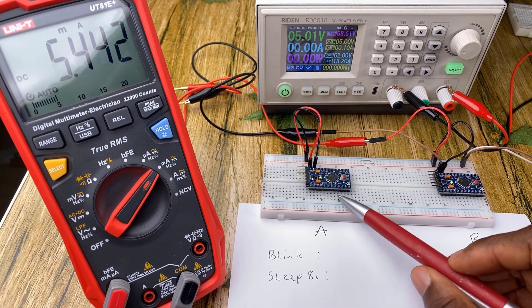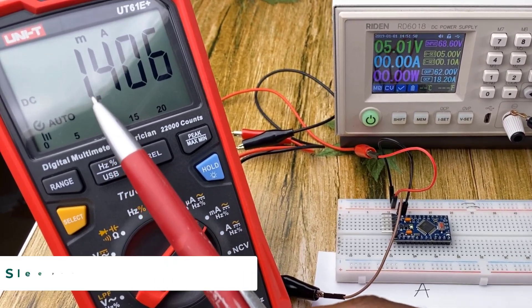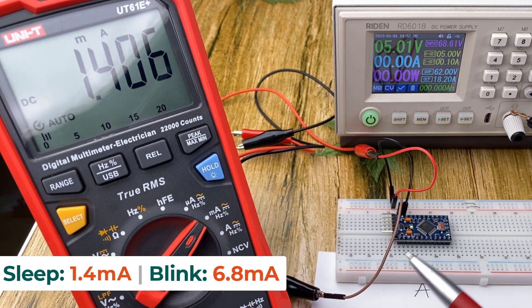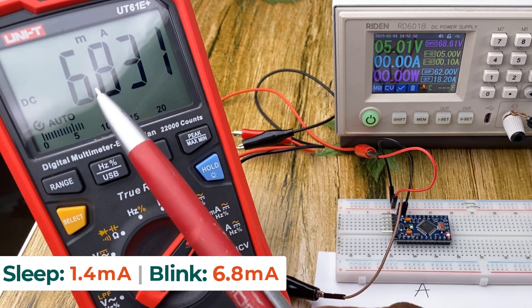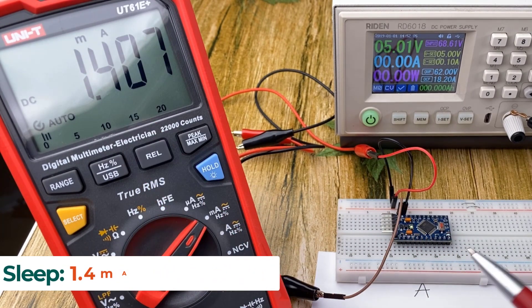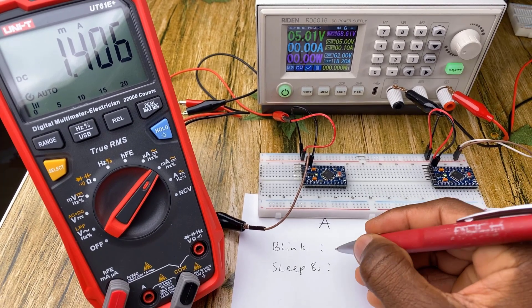Let's now move the multimeter to this board. Once again we can see about 1.4 milliamps when the board is sleeping and 6.8 milliamps when the LED is on. So we'll go ahead and record that as well.